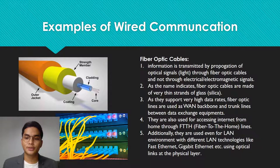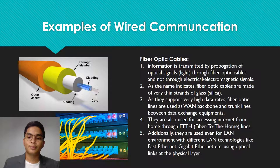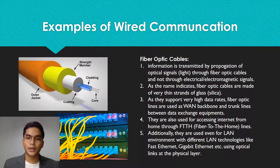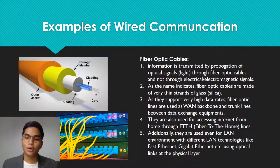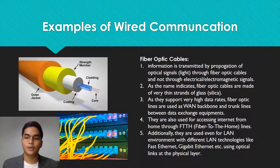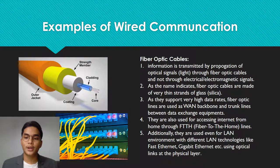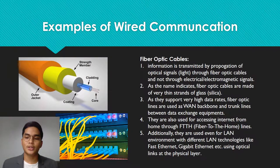The next example is fiber optic cables. Information is transmitted by propagation of optical signals — light — through fiber optic cables, and not through electrical or electromagnetic signals. Fiber optic cables are made of very thin strands of glass called silica. As they support very high data rates, fiber optic lines are used as WAN backbone and trunk lines between data exchange equipment. They are also used for accessing the internet from home through FTTH, or fiber to the home lines, and even in LAN environments with technologies like fast ethernet and gigabit ethernet, using optical links at the physical layer.